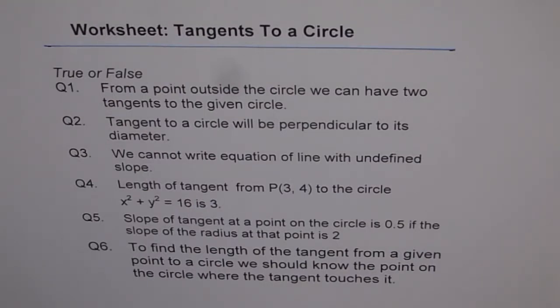Question 5: Slope of tangent at a point on the circle is 0.5 if the slope of the radius at that point is 2.